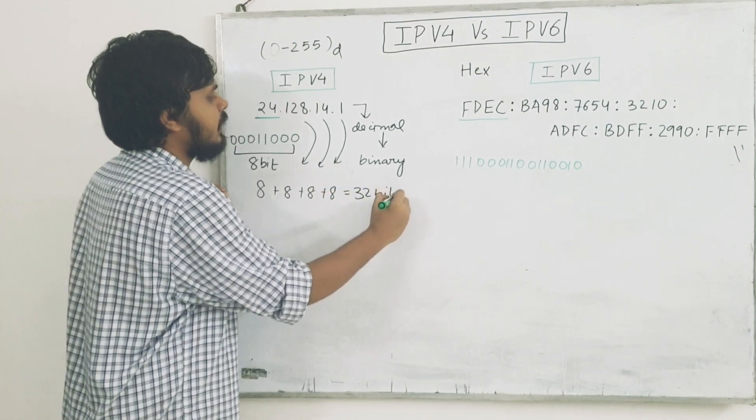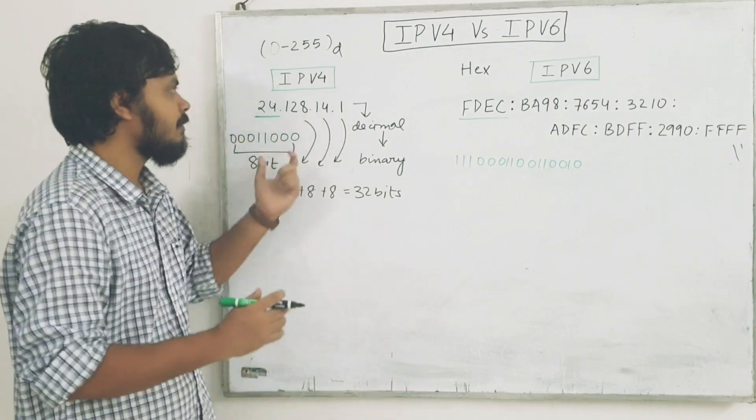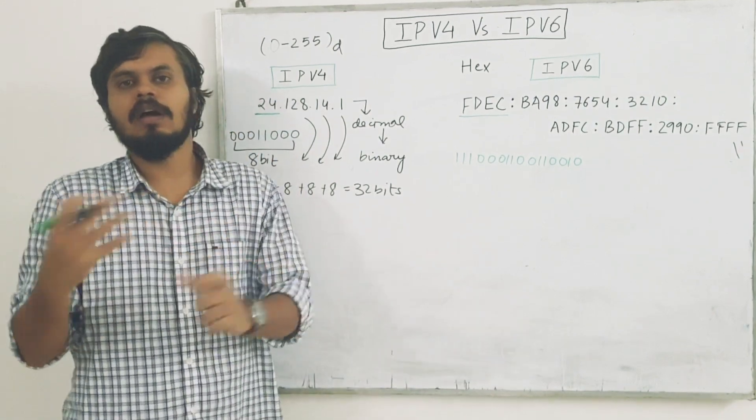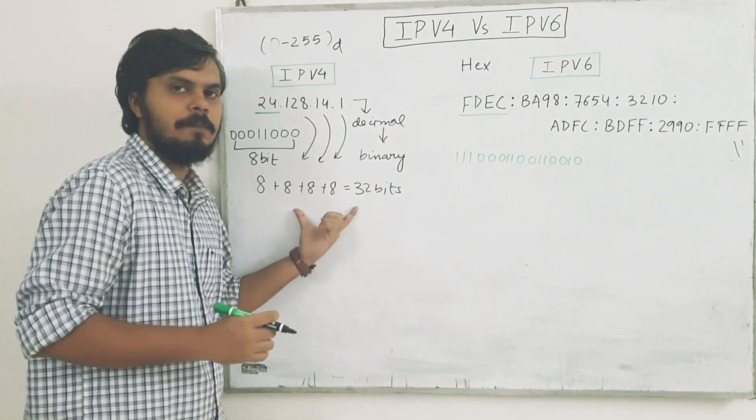So there will be 8 plus 8 plus 8 plus 8, 32 bits, which is IPv4. There are 32 bits when you have IPv4 break down into binary, it will form a pattern.